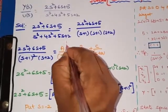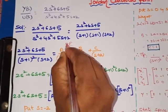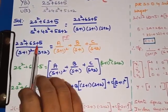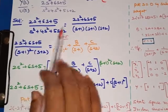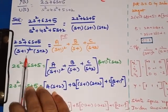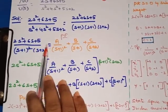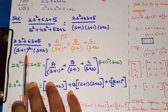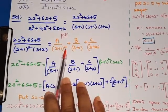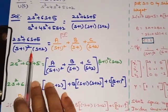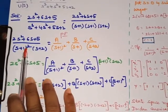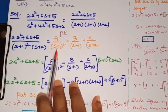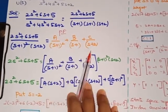Next, you have to apply partial fractions. After applying partial fractions, the equation (2s² + 6s + 5) / ((s+1)²(s+2)) — whenever we have (s+1)² that represents repeated variables. So the standard partial fraction has to be represented as: A/(s+1)² + B/(s+1) + C/(s+2).